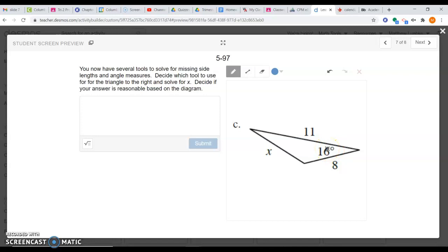When I see a law of cosines problem, I set it up by identifying the given angle as capital C. The side length across from my angle is little c. I can choose the other two side lengths to be A or B. I'm going to have 11 be my A and 8 be my B.